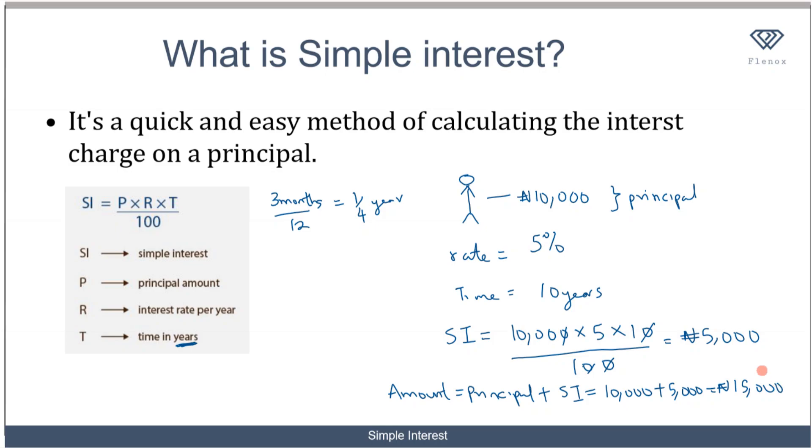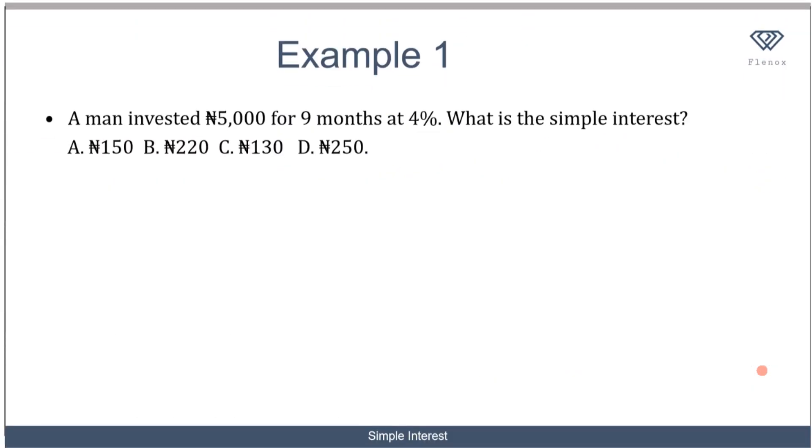Now let's look at one more example in detail. This question says a man invested N5,000 for 9 months at 4%. What is the simple interest? Any time you see me solve a question or an example in which there are options, it means that that question has been gotten from JAMB past question. So this is an actual JAMB past question. We know our principal is given to be 5,000, we know that our rate is 4%, and we know that the time is 9 months.